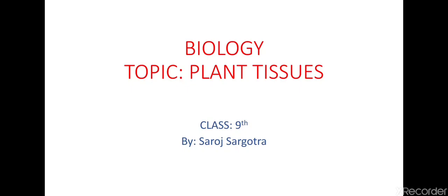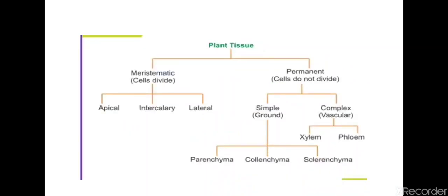Hello everyone, hope you all are doing well. As we were discussing the topic of tissues, in the first PPT we covered the mind map of plant tissues where we discussed different types. So let us now go ahead with the further topics of this chapter. We discussed different types of plant tissues like meristem and permanent tissues and their divisions.